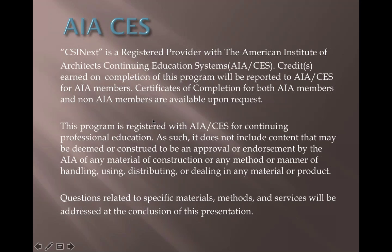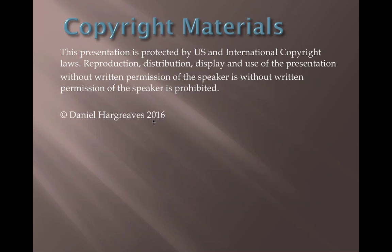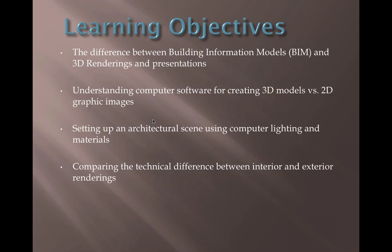As mentioned, CSI Next is a registered provider with the AIA, and this is accredited for CES. Please fill out the survey at the end of the webinar, and include your AIA number if you need it registered with them. These materials are copyrighted. Our learning objectives are: to distinguish the difference between BIM and 3D rendering; understand computer software for creating 3D models versus 2D graphics; set up an architectural scene using computer lighting and materials; and compare technical differences between interior and exterior renderings.